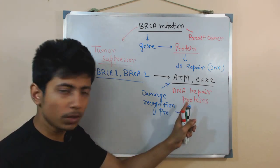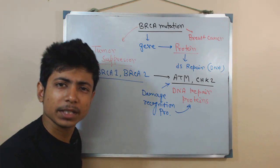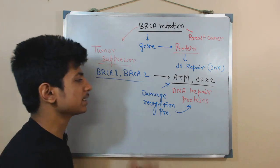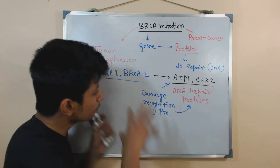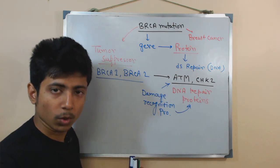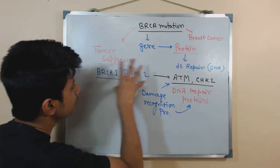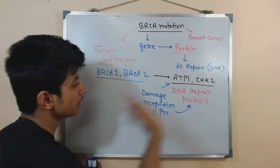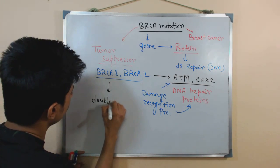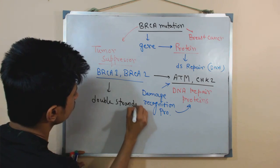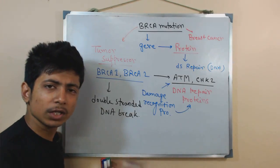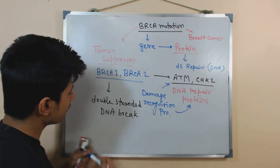Those damage recognition proteins will further recruit DNA repair proteins. We have different modes of DNA repair mechanisms in our body — like nucleotide excision repair and base excision repair. For all those repair mechanisms, different types of proteins are required. BRCA produces certain receptor proteins which recruit further proteins to repair the double-stranded DNA break.